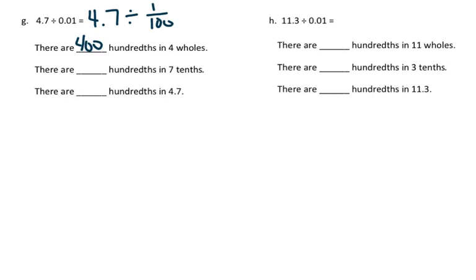There are 70 hundredths in 7-tenths. Therefore, there are 470 hundredths in 4 and 7-tenths.